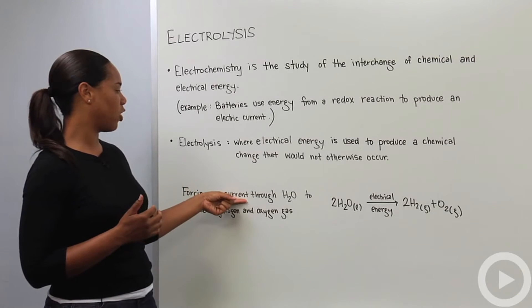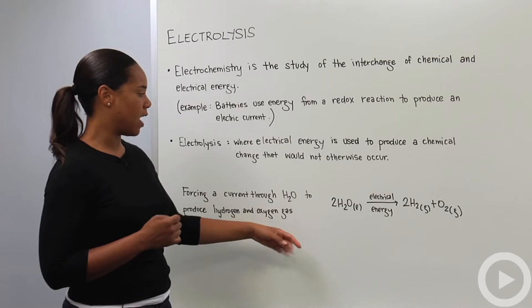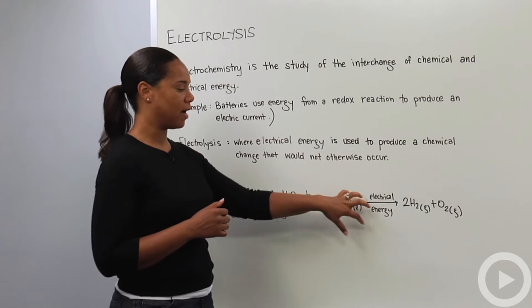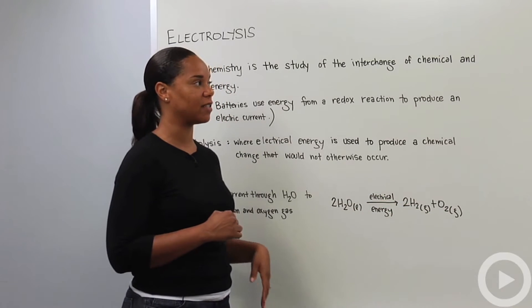For example, if you forced a current through H₂O to produce hydrogen and oxygen gas, that reaction looks something like this: You have two waters, add in some electrical energy and you get 2H₂(g) + O₂(g) out of that.